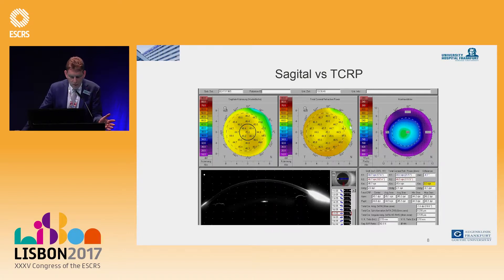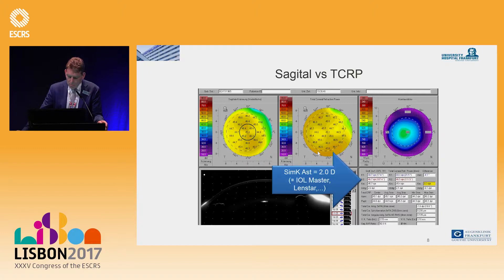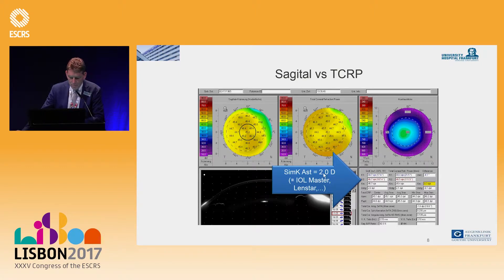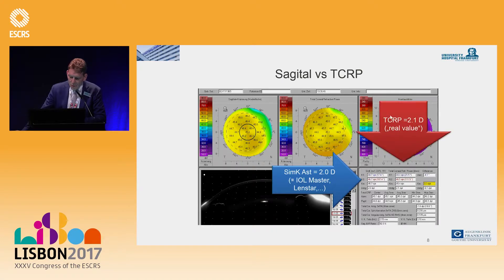Here is an example from our clinic: on the left is the sagittal map looking at the anterior surface, and on the right is the total corneal refractive power. A thickness map is also provided by the Pentacam measurement. Looking at SIMK, which takes only the anterior surface, we measured 2 diopters of astigmatism — the same as would be obtained with IOL Master or Lenstar — while the total corneal refractive power at this zone was 2.1 diopters, a difference of only 0.1 diopters.